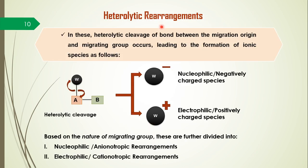In heterolytic rearrangements, the first step involves heterolytic cleavage of the bond between the migration origin and the migrating group, which leads to the formation of ionic species. As we know, heterolytic cleavage always leads to the formation of ionic species — either positive or negative — which can also be called electrophile or nucleophile respectively. Consider this example where heterolytic cleavage between the migrating group and migration origin gives two different species: one is an electrophilic (positively charged) species, and another is a nucleophilic (negatively charged) species.